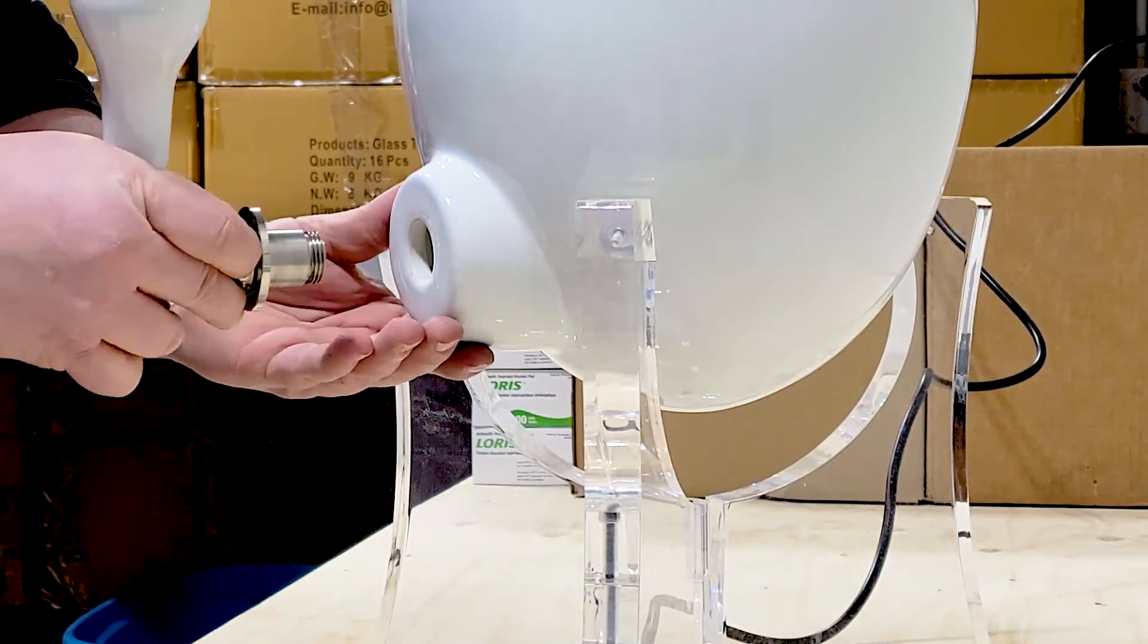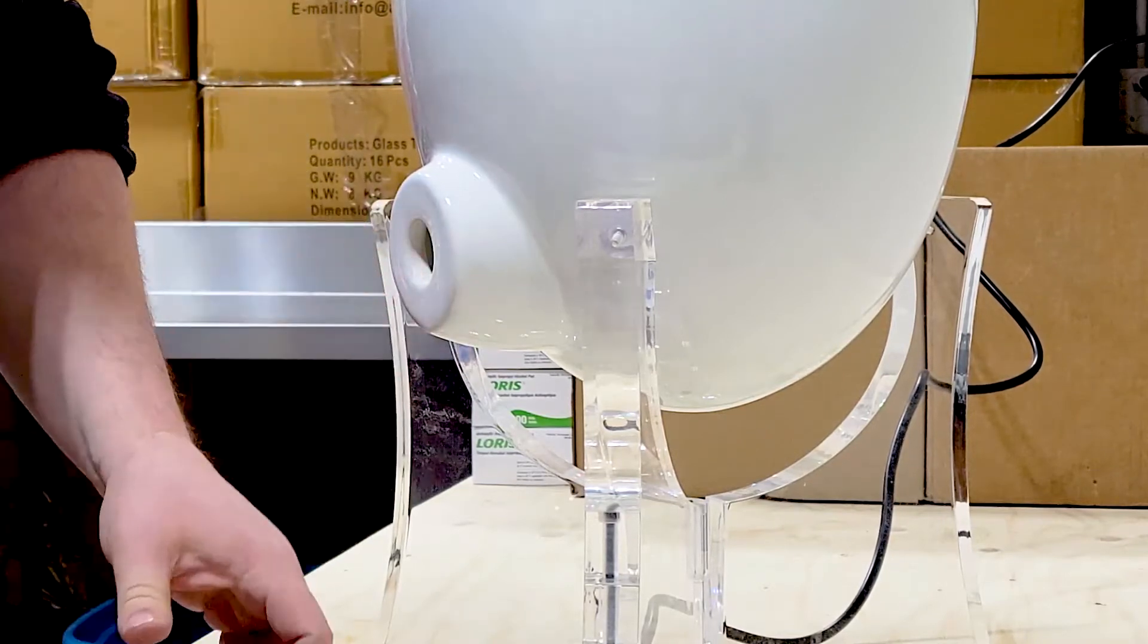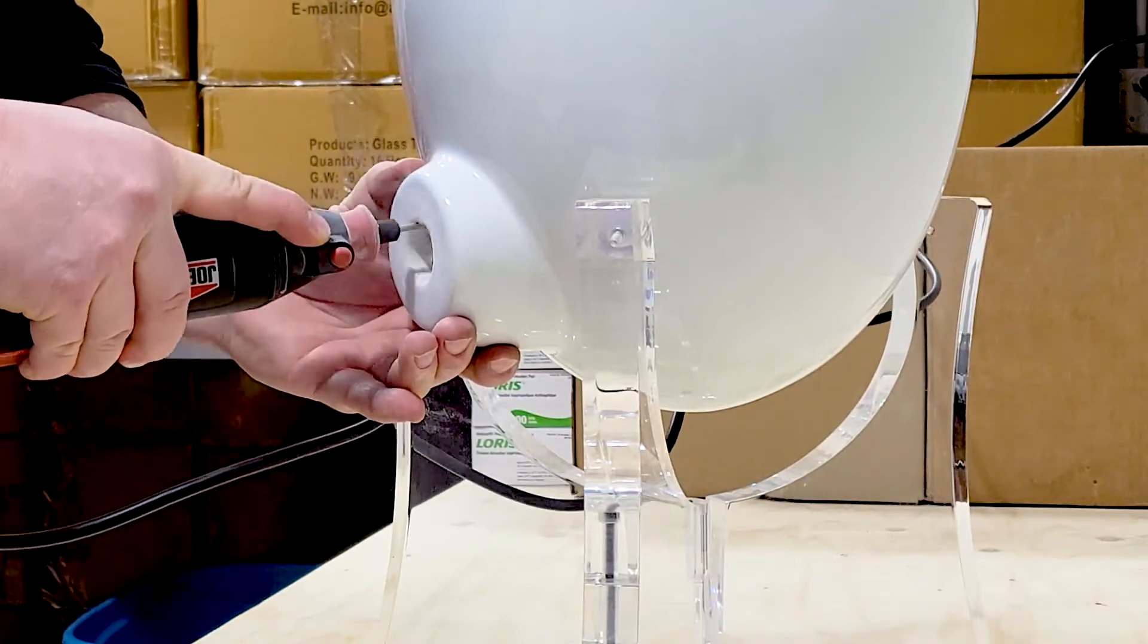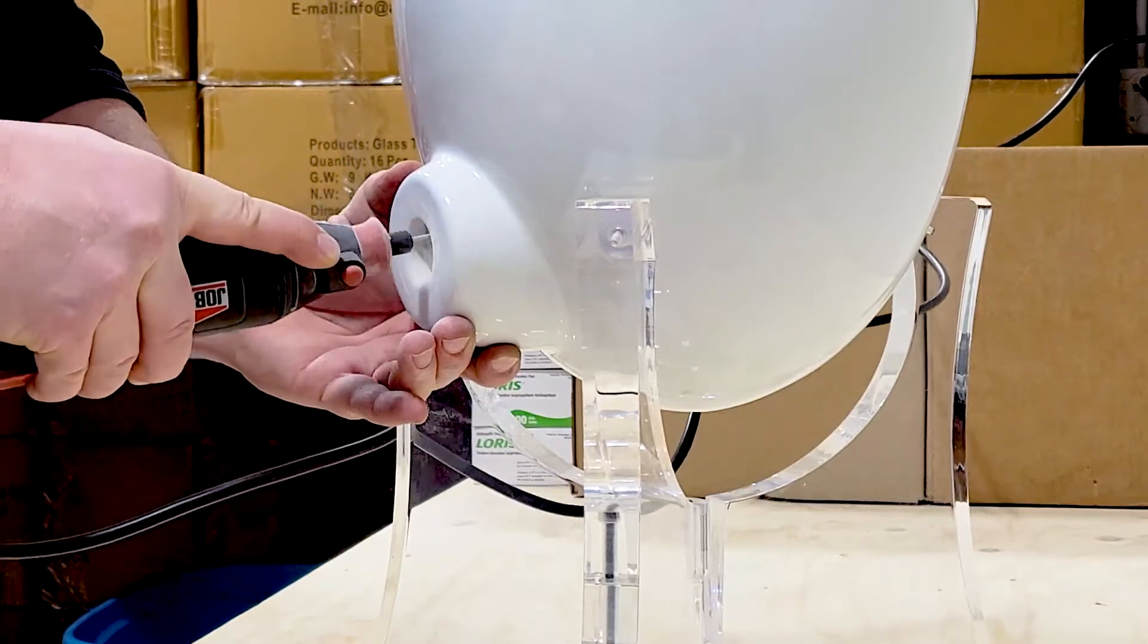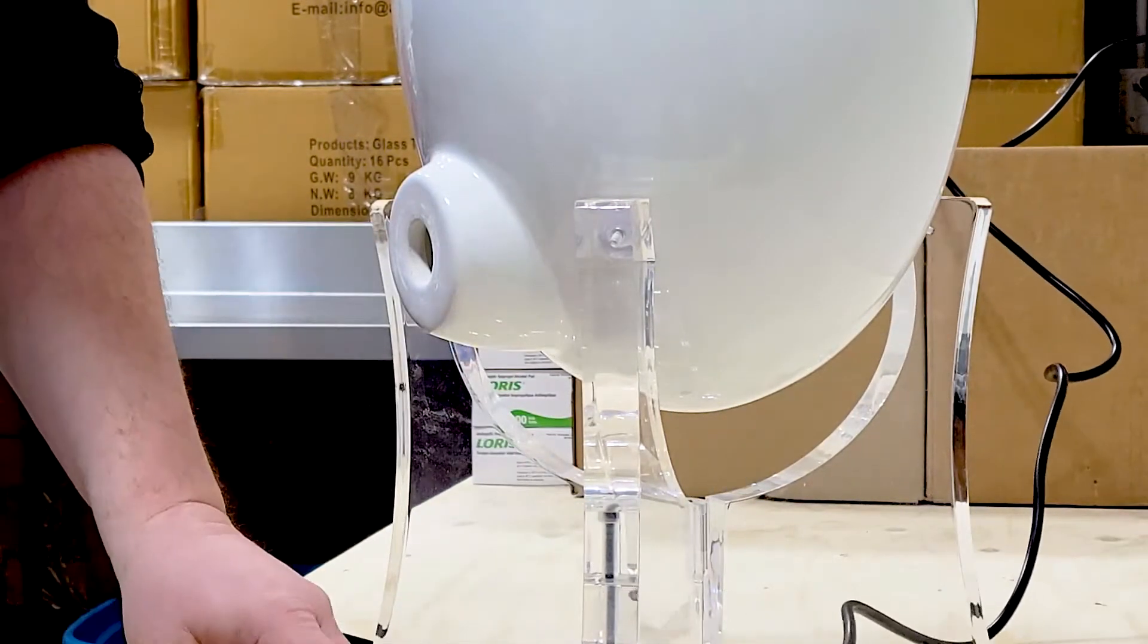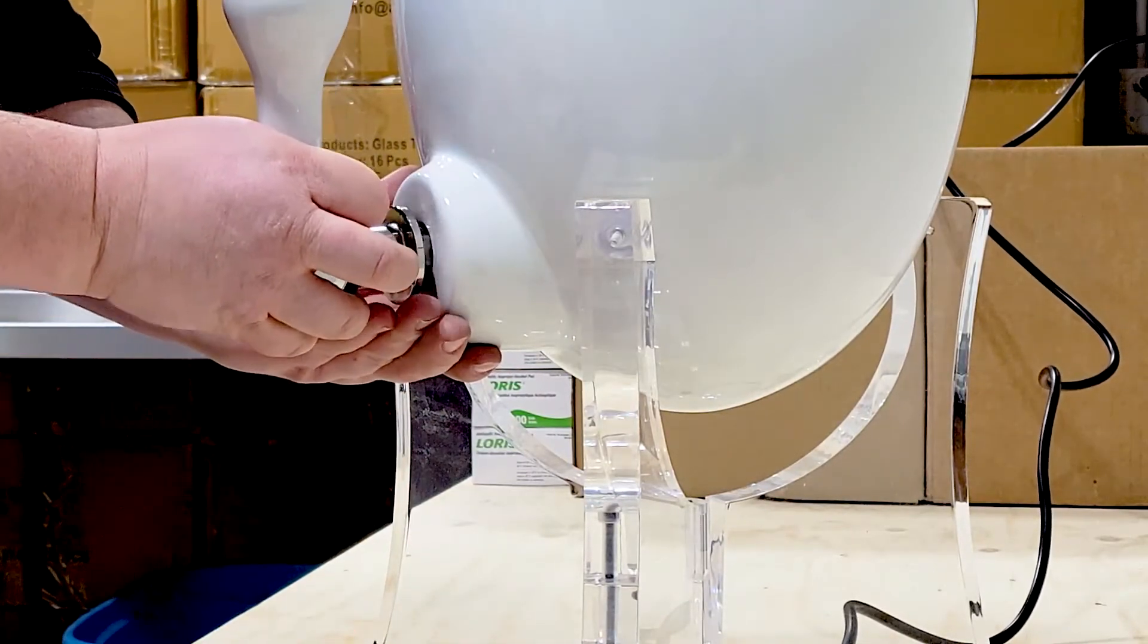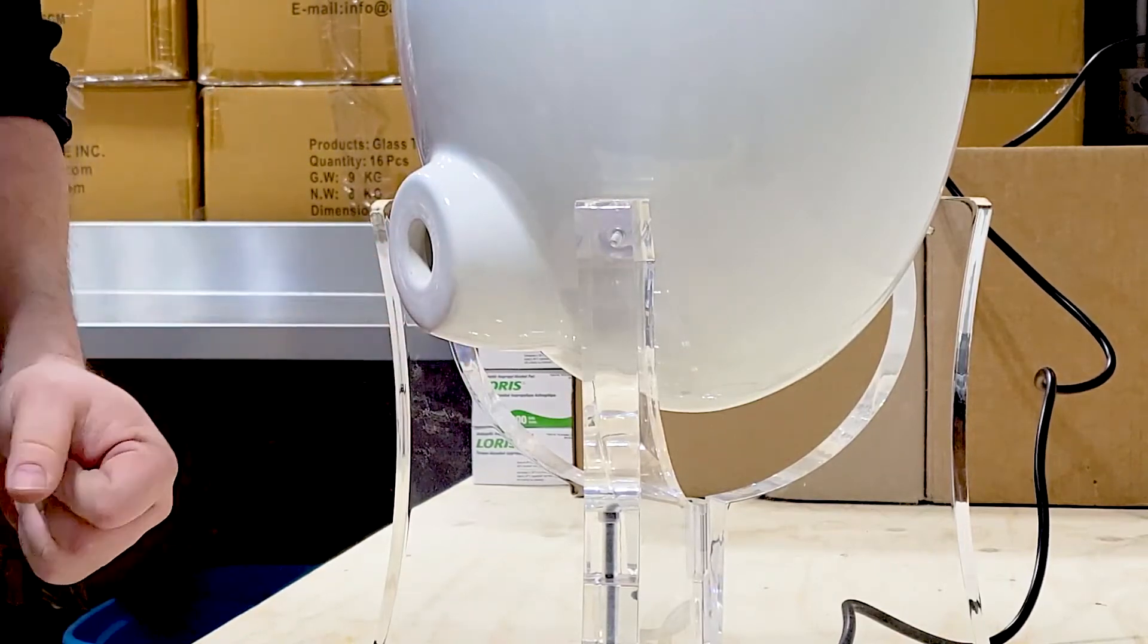Proceed in stages, checking the progress of the opening regularly. Be sure to file the opening using constant, even circular motions. The opening is large enough when it can accommodate the entire tap body up to the guard, leaving a small gap for the seal.